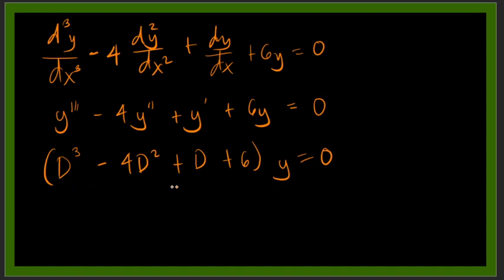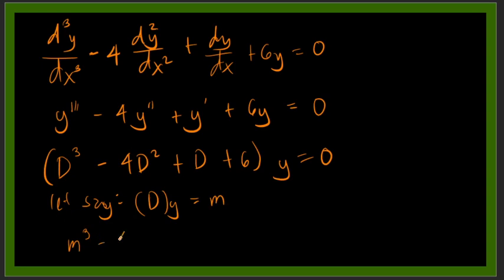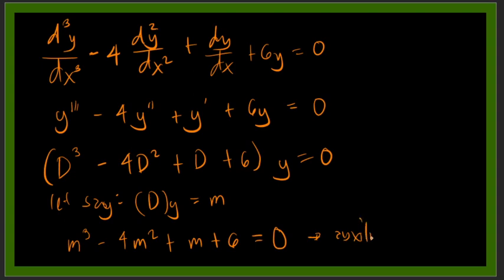To get the auxiliary equation, we let D equal m. So we can write this as: m³ − 4m² + m + 6 = 0. This is now our auxiliary equation. By finding the roots of this auxiliary equation, we can obtain the general solution of our higher order linear equation with constant coefficients.